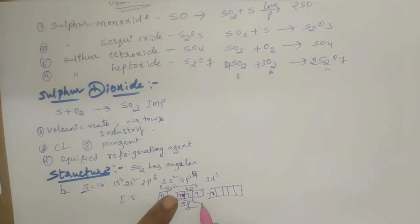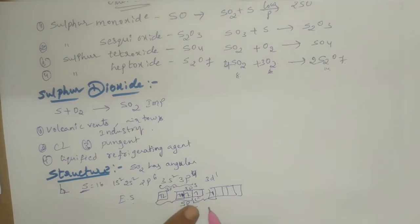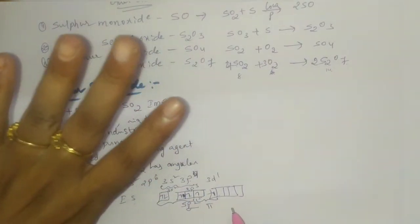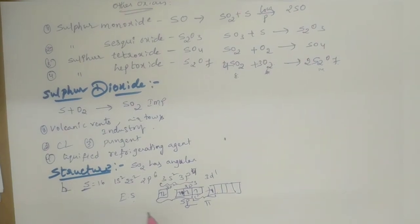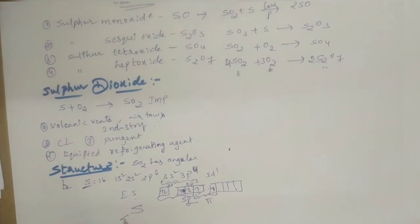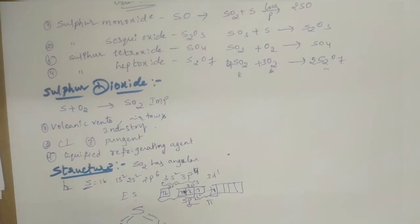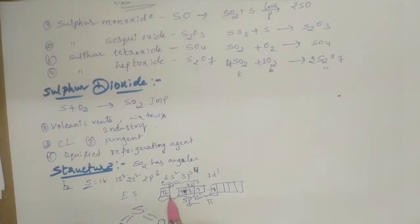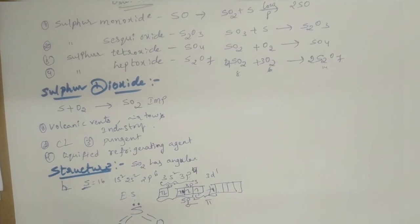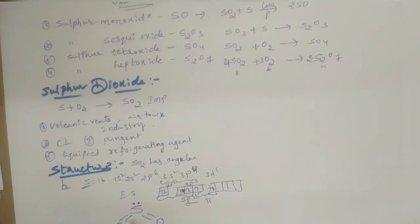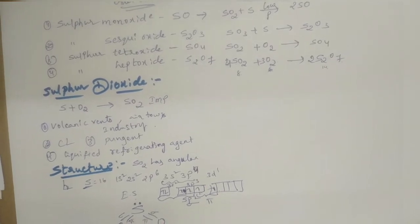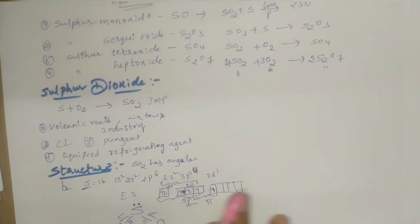These form sigma bonds and these two form pi bonds with the oxygens. Totally four bonds are formed. The structure of sulfur dioxide has one lone pair of electrons and four bonds - two sigma bonds and two pi bonds. This is about sulfur dioxide.